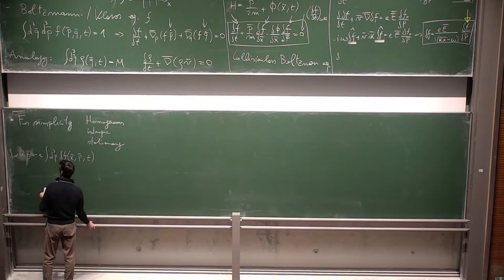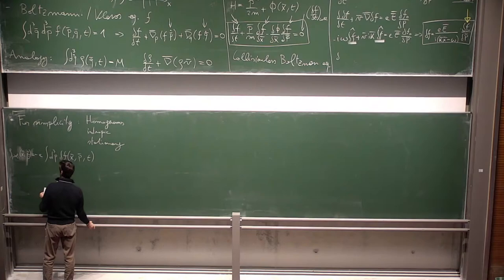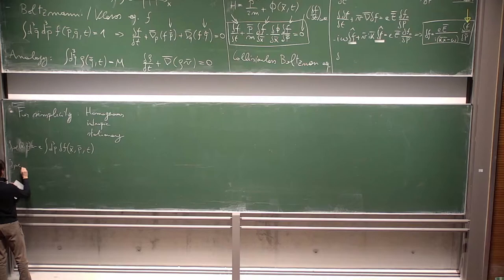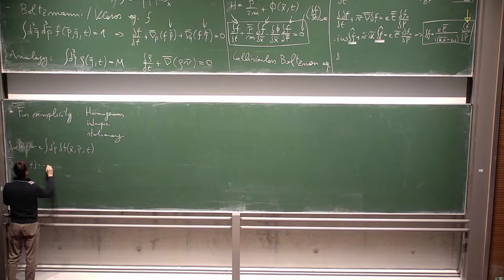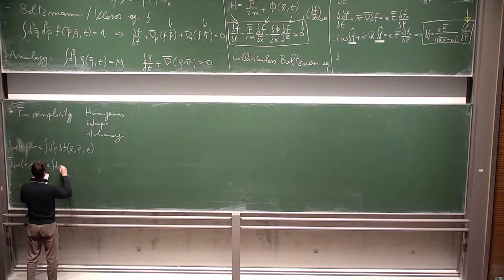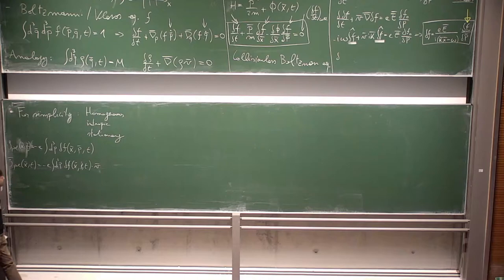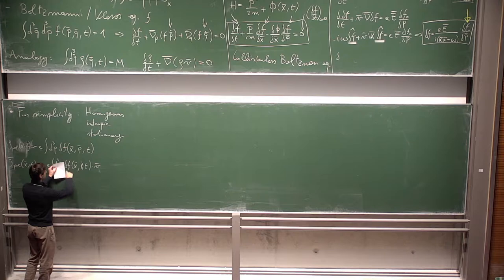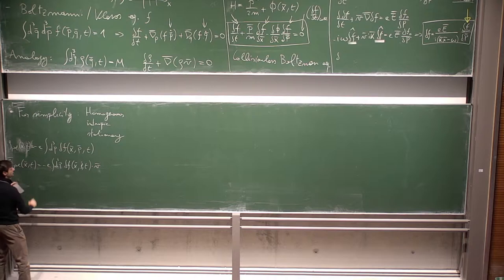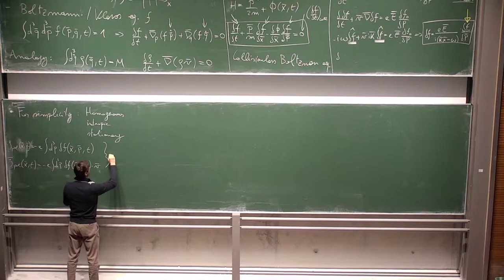Similarly, the polarization current j_pol at position x and time t equals the charge times the integral ∫ d³p · δf(x, p, t) · v. This is a density times velocity — that is the current. We can now link these two quantities to find our polarization.